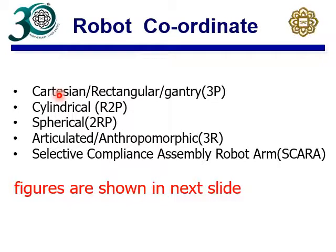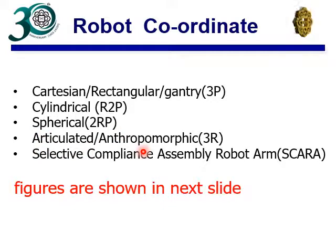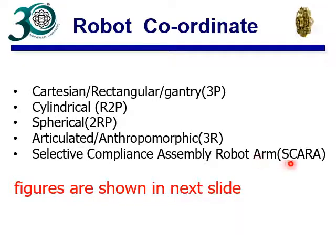A CNC machine is basically a Cartesian robotic system. You may also have a cylindrical robot — in this case it has one revolute joint and two prismatic joints, so R2P. A spherical robotic system will have two revolute joints and one prismatic joint. An articulated or anthropomorphic robotic system will have three revolute joints. A special type called the SCARA robot — Selective Compliance Assembly Robot Arm — is very famous in industry for pick-and-place operations.